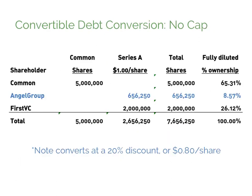Here you see the cap table after the close of the Series A preferred. The common holders retain their 5 million shares originally outstanding. The angel group has purchased 656,250 shares based on their discount and accrued interest, and the venture capitalists invested $2 million at $1 per share. As you can see, our angels own 8.57% of the company.